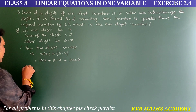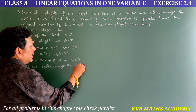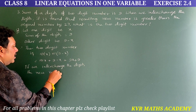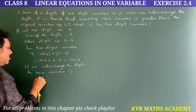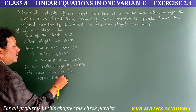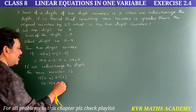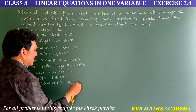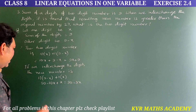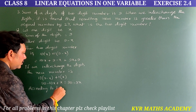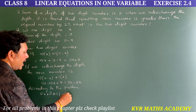If we interchange the digits, X goes to the units place and (9 − X) goes to the tens place, giving the new number: 10(9 − X) + X = 90 − 10X + X = 90 − 9X. According to the problem, if we add 27 to the original number we get the new number: 9X + 9 + 27 = 90 − 9X.